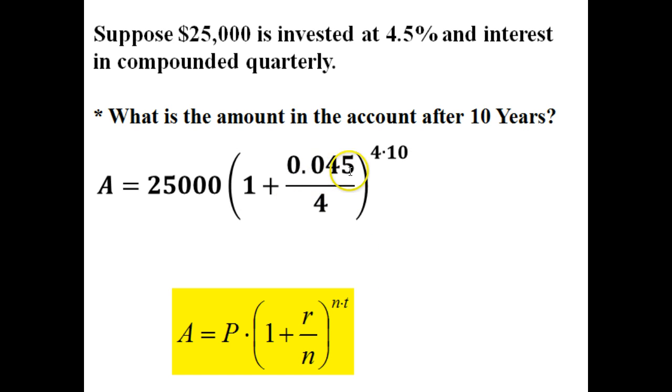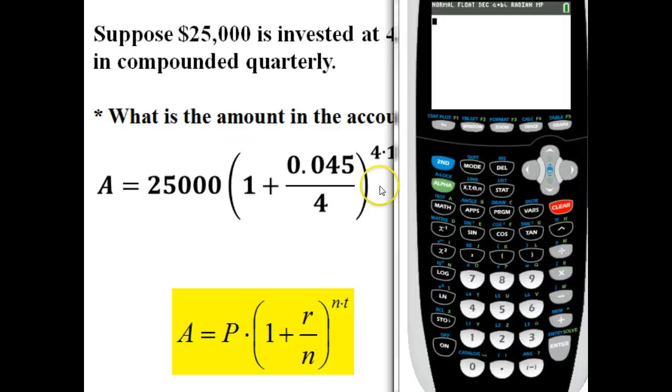0.045, again that's our interest rate that we're receiving on it. 4 is the number of times that it is compounding in a year, and then 4 times 10. When you plug it into your calculator, it should look just like this.